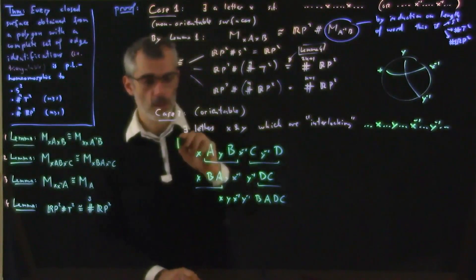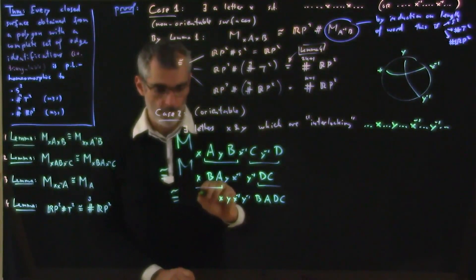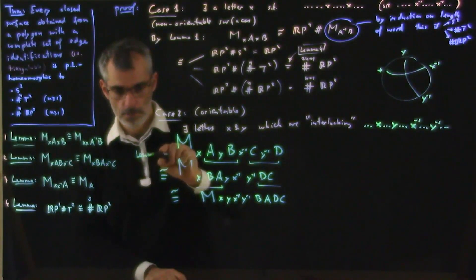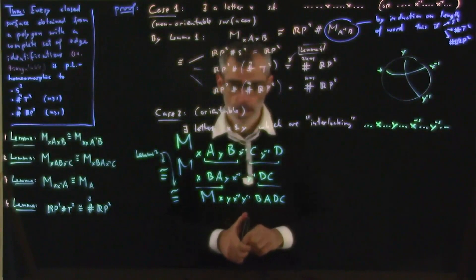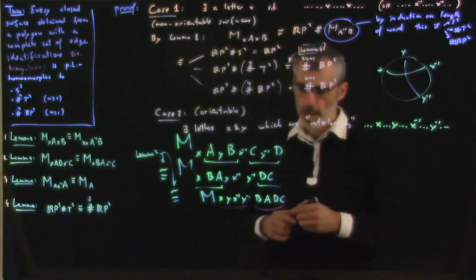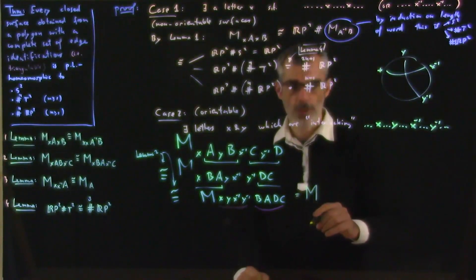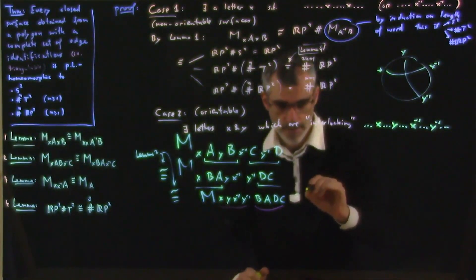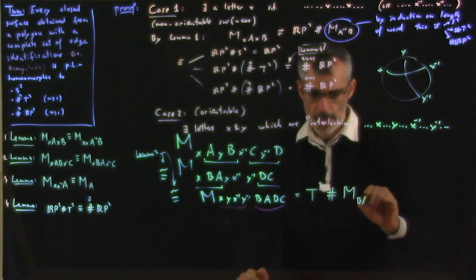So the manifold associated to this word is homeomorphic to the manifold associated to this word is homeomorphic to the manifold associated to this word. And these are all instances of lemma 2. And what is that? Well, I have here the word for a torus, and here's some other word. So this is the same thing as the manifold associated to the word. This is the same thing as the torus T^2 connect sum with the manifold associated to B, A, D, C.